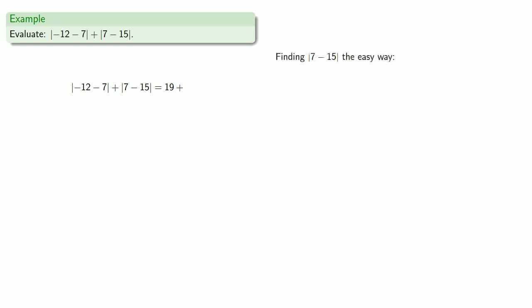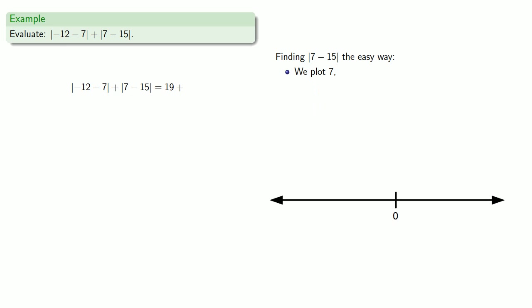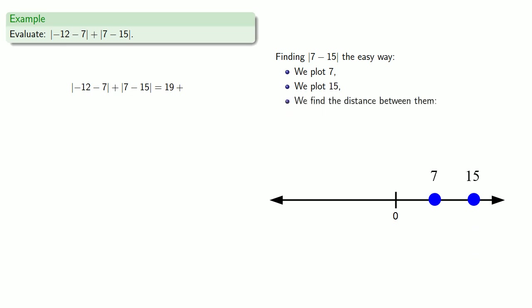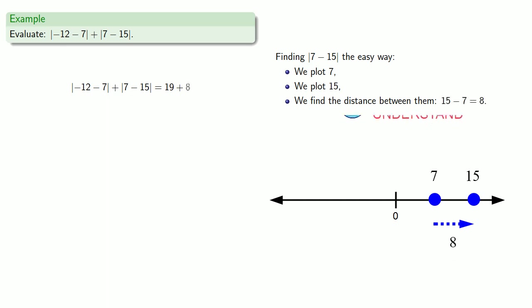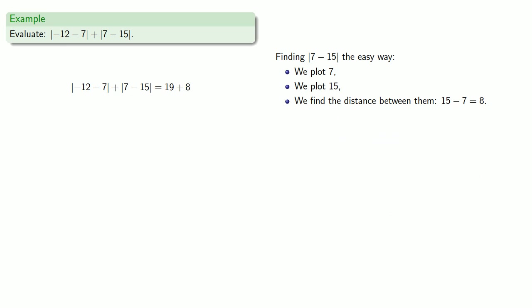Let's find the absolute value of 7 minus 15 the easy way. This is the distance between 7 and 15. So we plot 7 and plot 15, then find the distance between them, which is 15 minus 7, or 8. So this absolute value expression becomes 27.